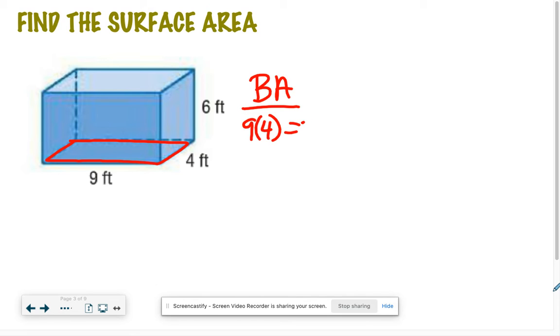My base area BA: 9 by 4. That's how you find the area of a rectangle, which gives me 36. And then can we agree that the top and bottom are congruent? They're the exact same. So I can multiply this by 2 and we get 72. That's my base area.